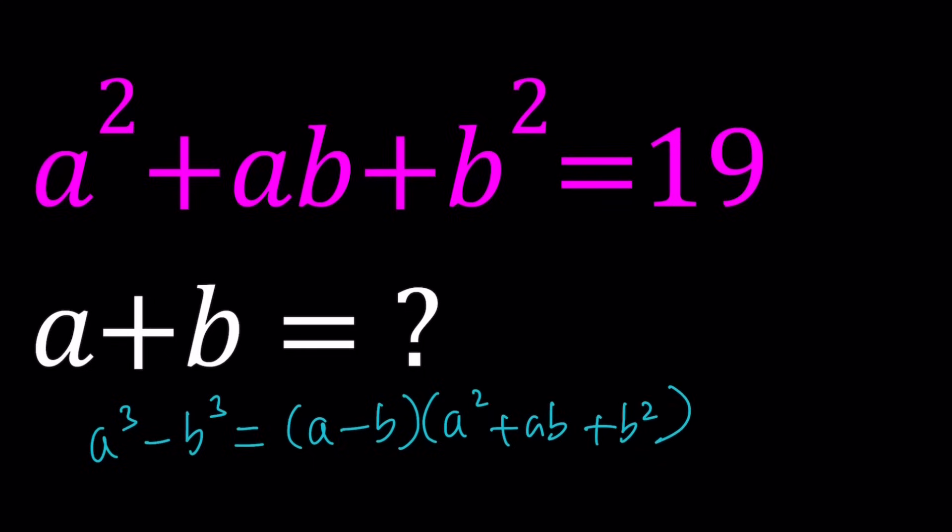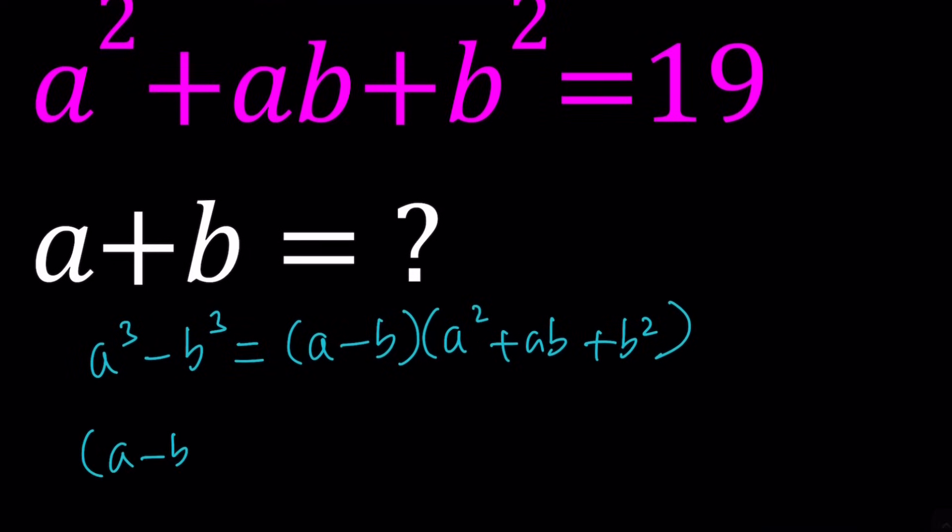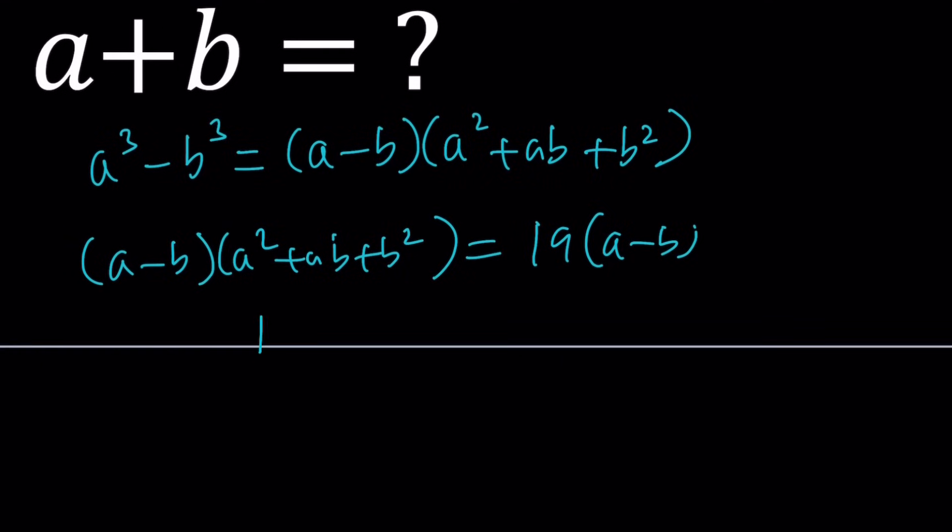We can multiply both sides by a minus b here to get difference of two cubes. If you multiply the left-hand side by a minus b and the right-hand side by a minus b, this becomes difference of two cubes: a cubed minus b cubed, and then you get 19 times a minus b. So why am I doing this? Is this going to help us? Not that much, but this will give us an idea.